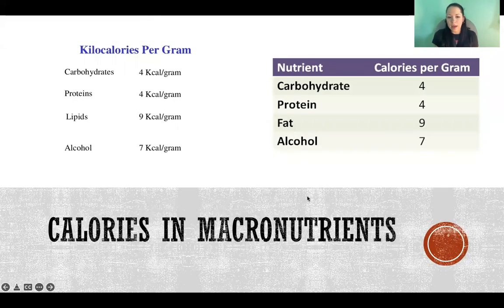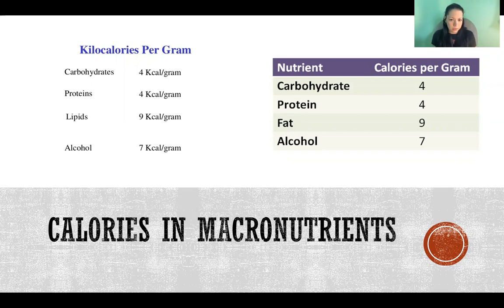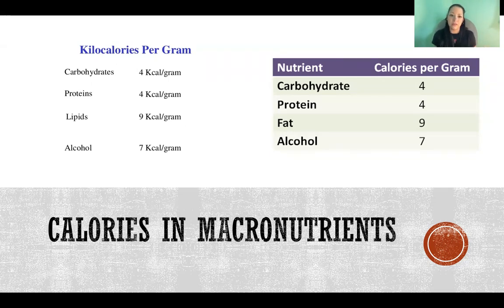When we look at our macronutrients, we get calories from carbohydrates, proteins, fats, and alcohol. As I've discussed in past videos, alcohol is not a nutrient because we don't have a deficiency disease if we don't consume it. Technically not a nutrient, but because we get calories from alcohol we still need to consider its caloric value if we're tracking our nutrition or calculating our calories.